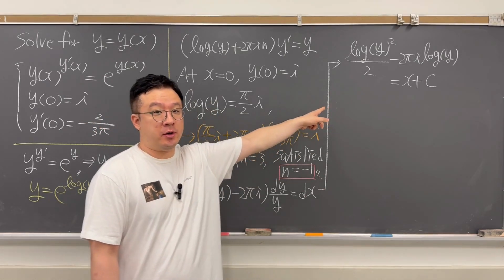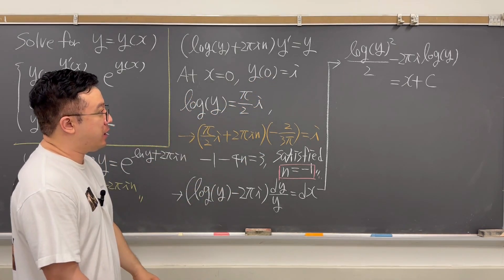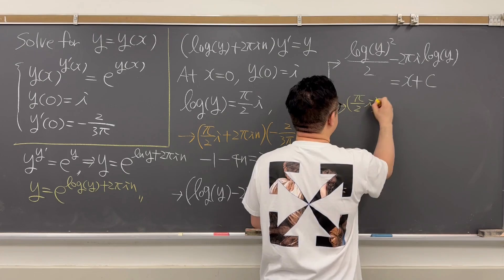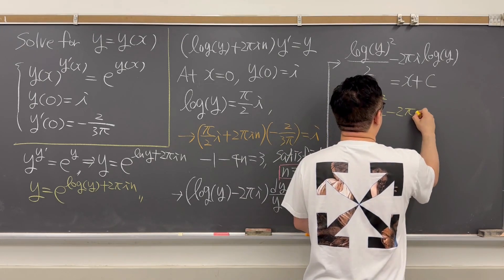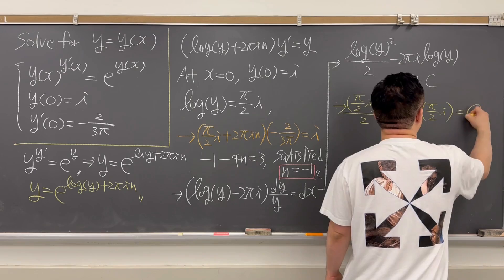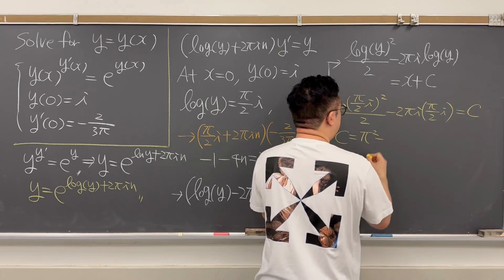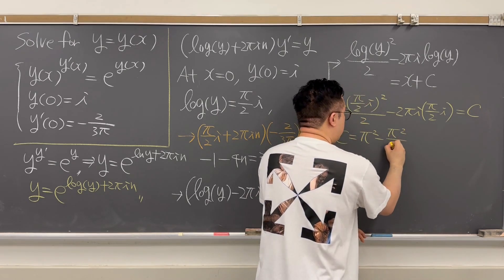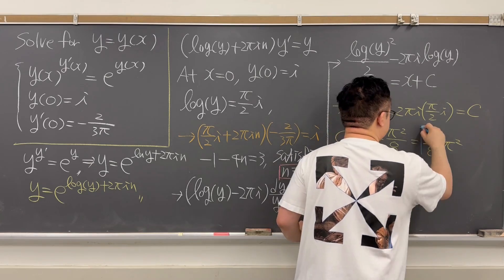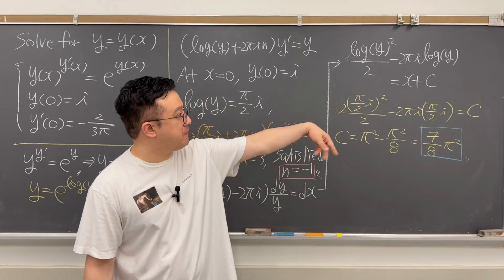To find constant C, we use x = 0, y(0) = i, and log(y) = πi/2. Plugging in: (πi/2)²/2 − 2πi·(πi/2) = C. Calculating this gives C = −π²/8 + π² = 7π²/8. So C = 7π²/8.